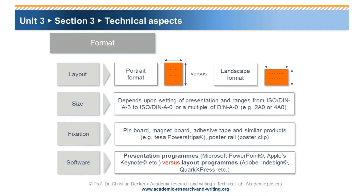There are many technical aspects to abide by when designing and generating an academic poster. These relate to conventions, rules of institutions, as well as the technical means available in the marketplace. A poster can be in portrait format or landscape format. The size of a poster depends upon the setting of the presentation and the rules of the institution, and it ranges from standard sizes A3 to A0, or a multiple of A0, such as 2A0 or 4A0.